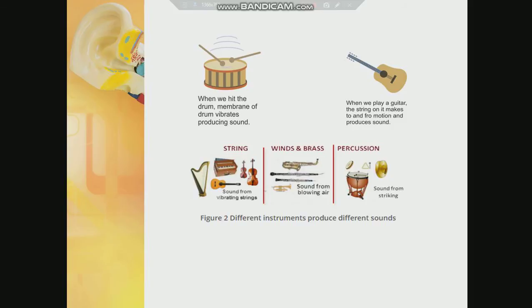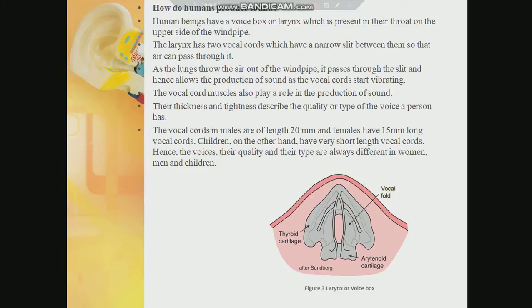Coming to different musical instruments and how they produce sound: when we hit the drum, the membrane of the drum vibrates and produces sound; when we play the guitar, the strings make a to and fro motion and produce sound. Based on what part of the instrument produces the sound, they are classified into three groups: string instruments, where sound is produced from vibrating strings; wind or brass instruments, where sound is produced from blowing air through vibration of air; and percussion instruments, where sound is produced by striking a stretched membrane.